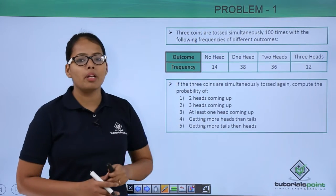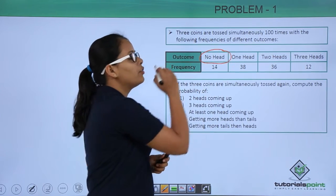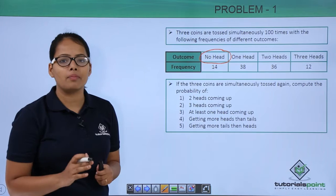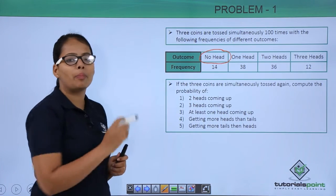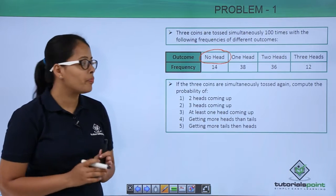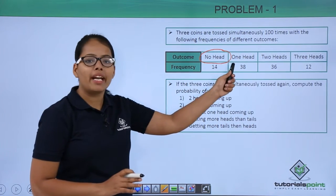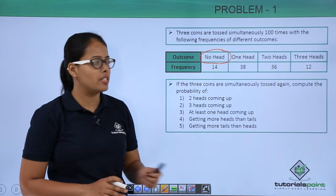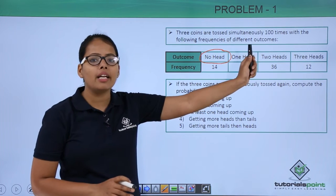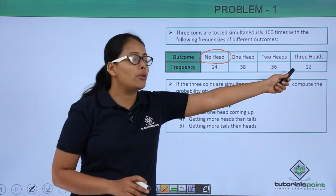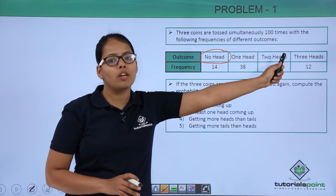What this data in the table represents? When 3 coins are tossed 100 times: 14 out of 100 times no heads appeared, only tails appeared. 38 out of 100 times only 1 head appeared, rest were tails. 36 out of 100 times 2 heads appeared and 1 tail appeared. And 12 out of 100 times 3 heads appeared on all the coins.